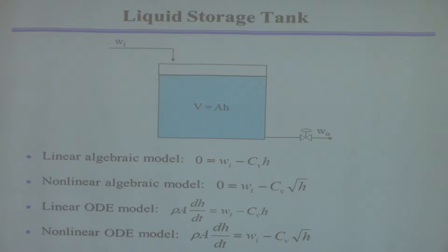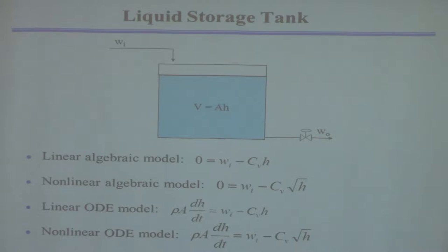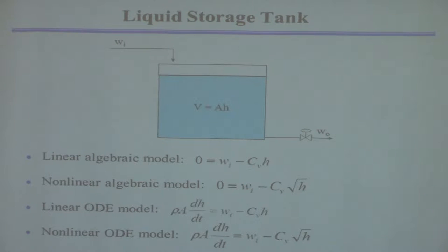When you took your mass and energy balances course, you always wrote: accumulation equals in minus out plus generation. The usual thing is to throw the accumulation term away and say it's zero — that makes the model steady state. But if you include accumulation, that leads to a differential equation. I'm just trying to gauge whether this is entirely bizarre to you or somewhat familiar.